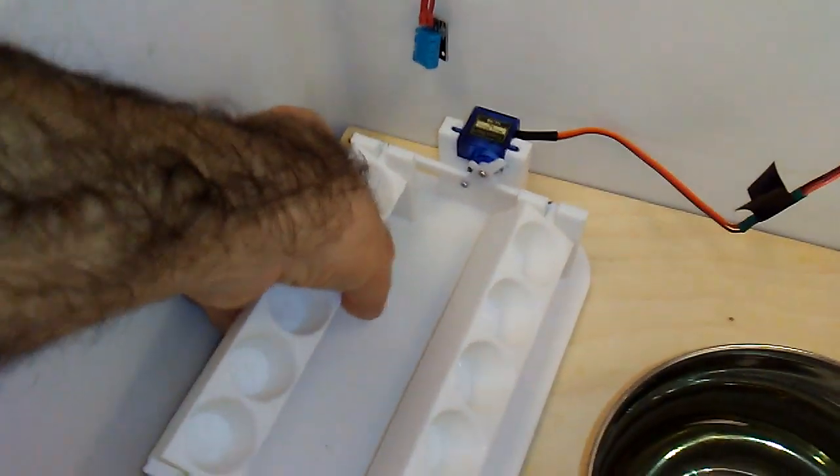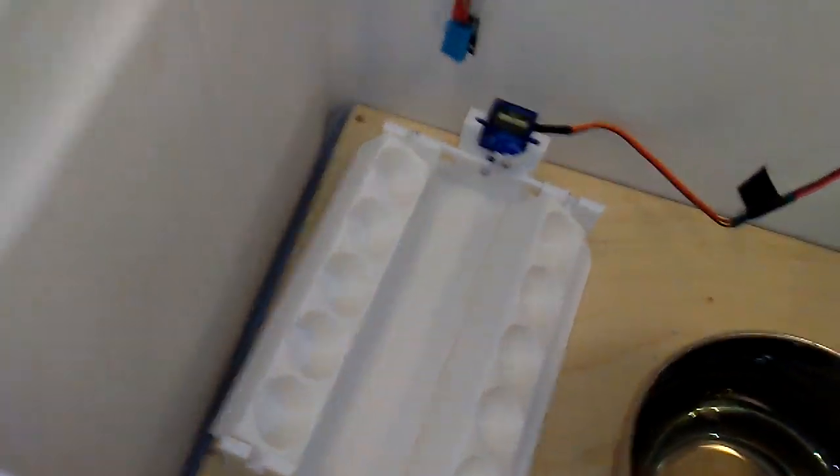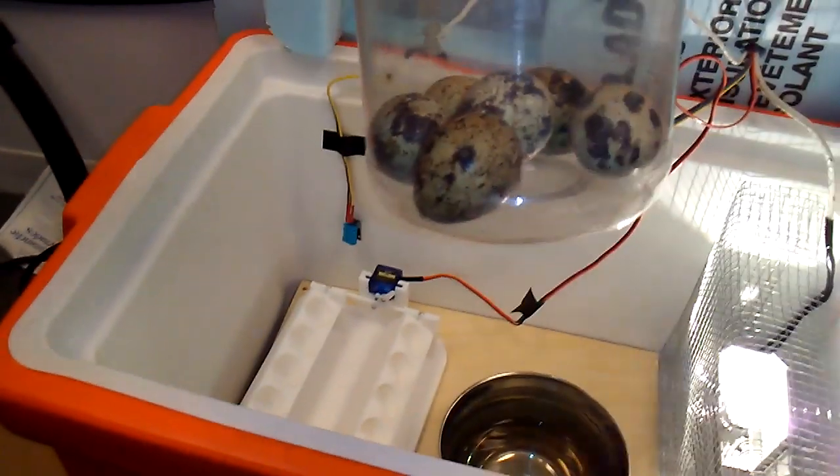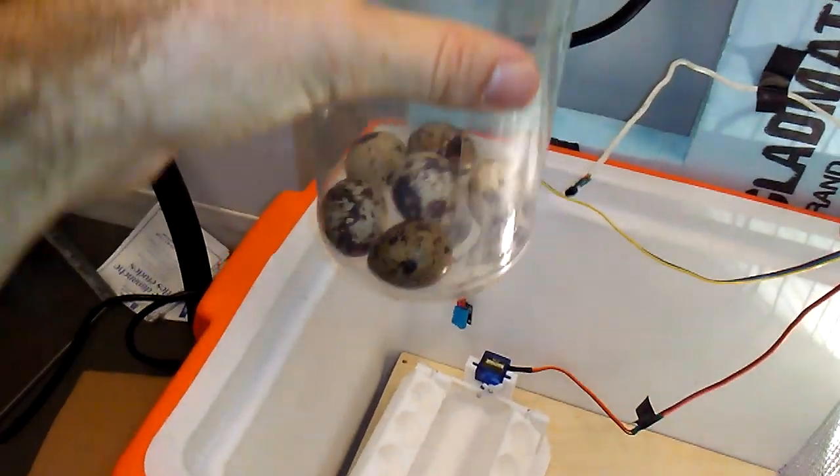This will be turning the eggs five, six times a day. Every four hours it will go right and then left so that it mimics what the brooding hen will do to the eggs.